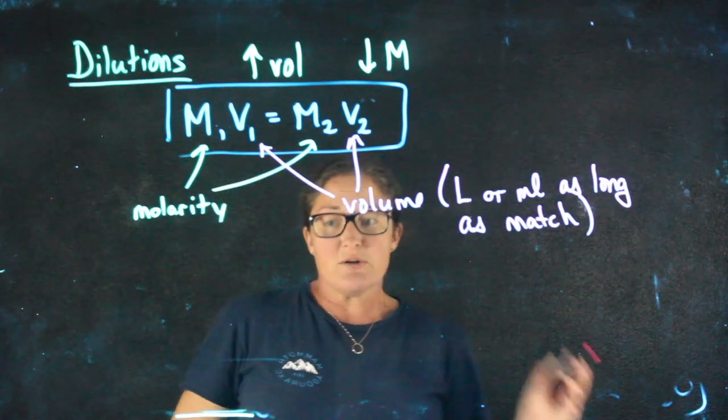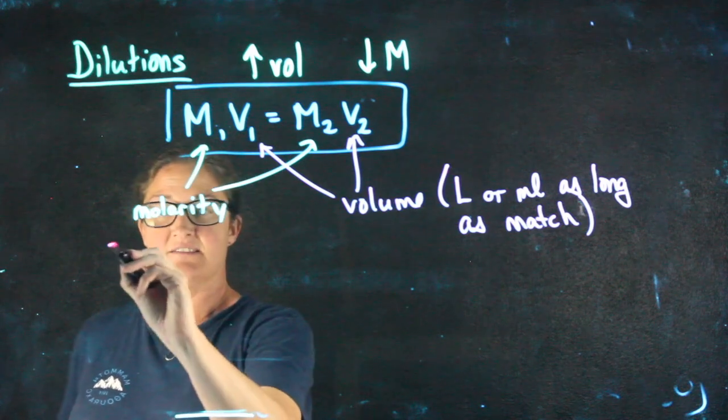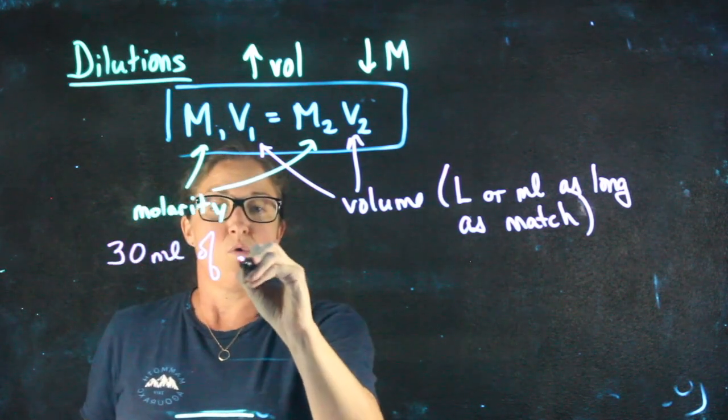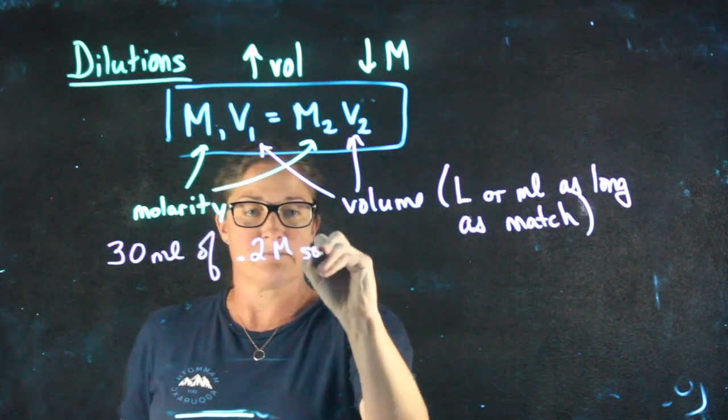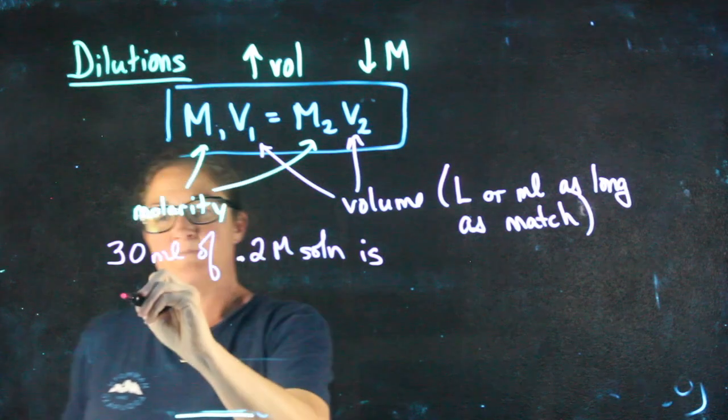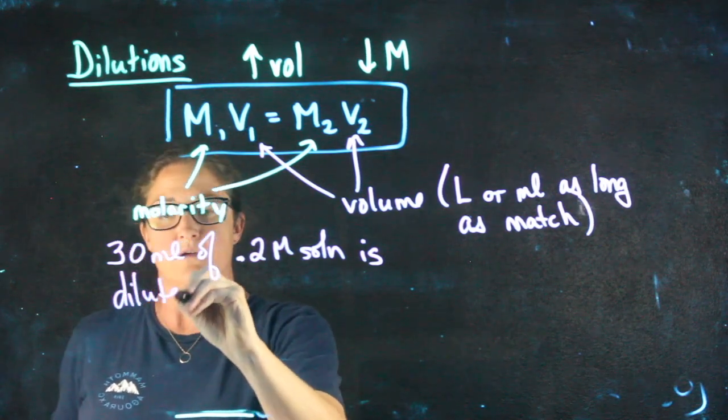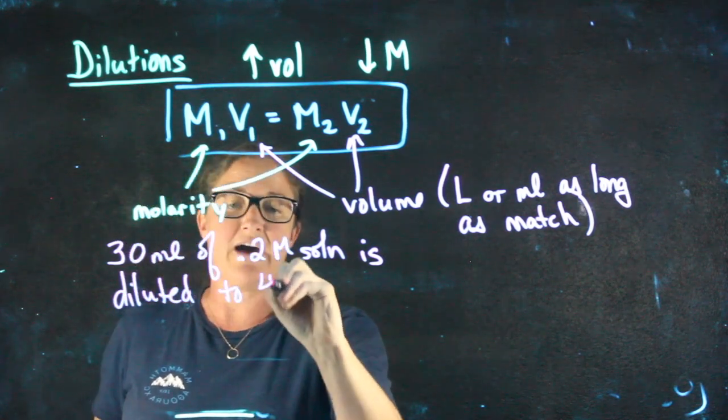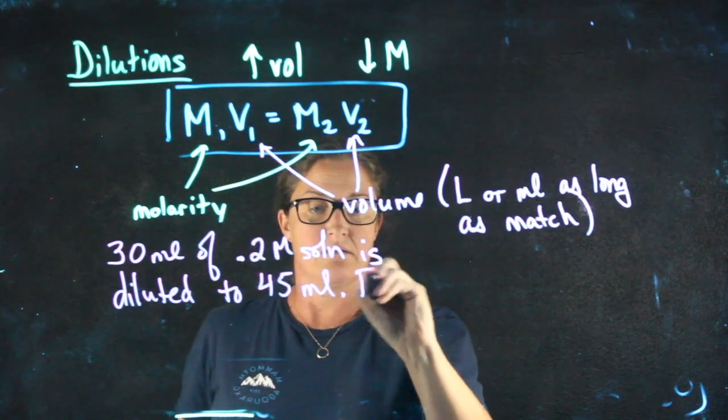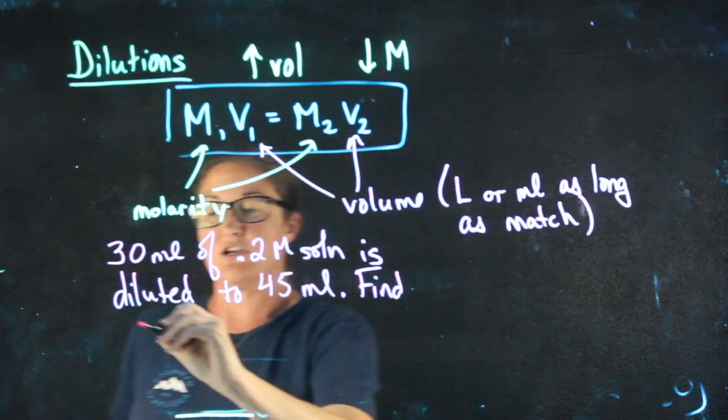Suppose I have a problem that says this: 30 milliliters of 0.2 molar solution is diluted to 45 milliliters. We're going to find the new concentration.